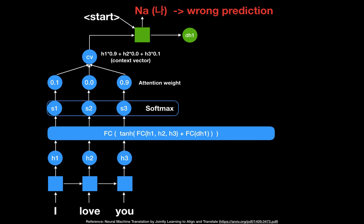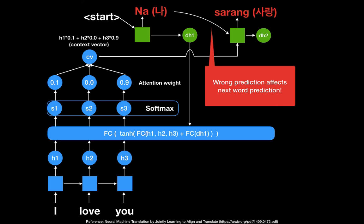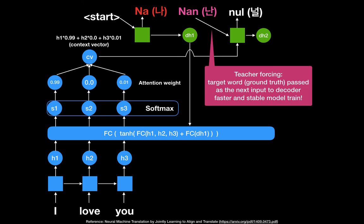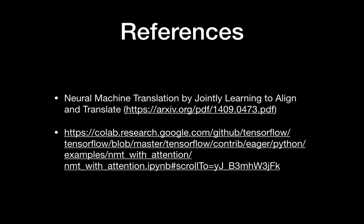As a bonus topic: what is teacher forcing? In a sequence-to-sequence model, if the decoder RNN cell outputs a wrong value, that wrong value propagates to the next RNN cell, causing cascading incorrect predictions. This makes training slow and ineffective. With teacher forcing, instead of using the decoder's previous output as the next input, we feed the real ground-truth target word. This makes model training faster and more stable.